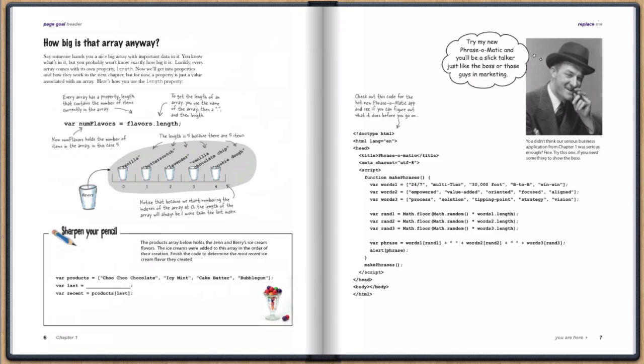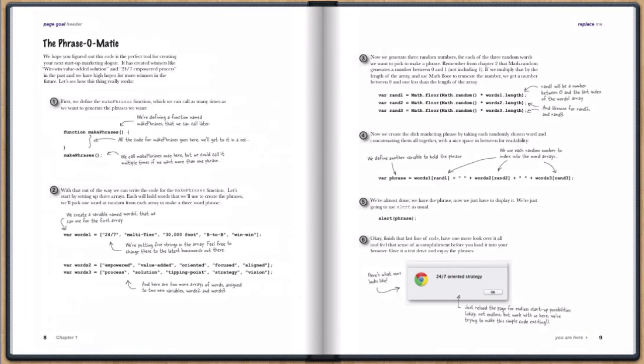Before getting back to Bubbles R Us, we have a quick little business application that we build called the Phrase-O-Matic. This is the next killer app for generating startup slogans, so you'll definitely want to get this working so you can use it for your own business ideas.